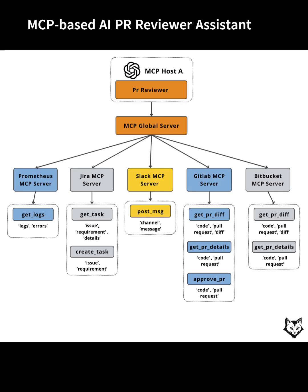Dataflow example: A developer opens a pull request in GitHub. A webhook sends PR data to the MCP host, which requests a review prompt via the agent scope MCP server. The host sends the prompt and PR details to the Gemini LLM, which determines which tools to run — e.g., fetch PR diff from GitHub, get Asana task details. The host invokes these actions through the MCP global server, with each specialized MCP server returning results from their respective APIs.